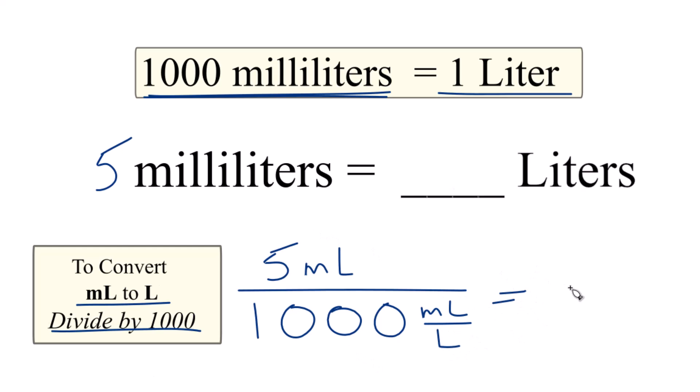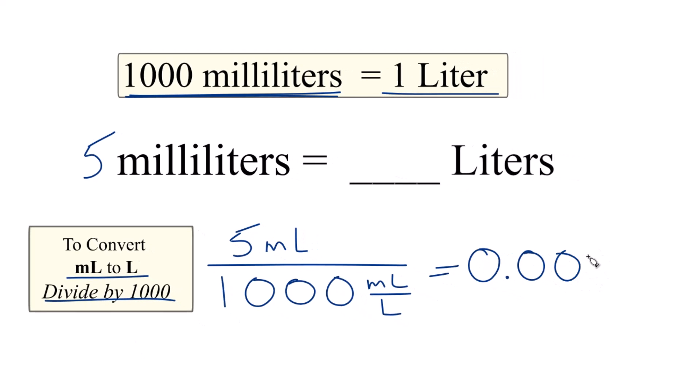Now, when we do the math, five divided by 1,000, that's 0.005. We have milliliters on top and the bottom—they cancel out. We're left with liters. So we have 0.005 liters.